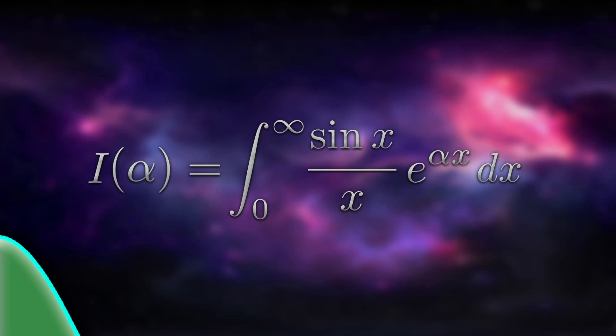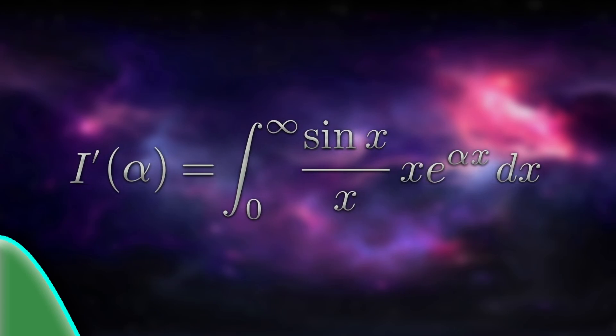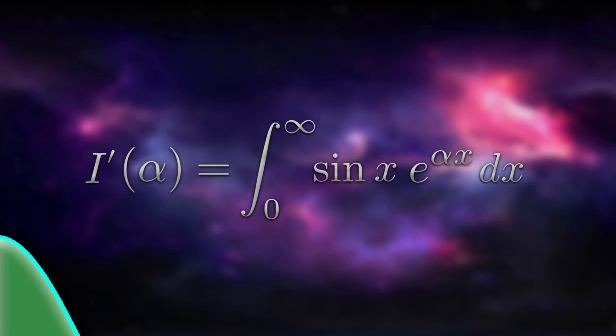We proceed by differentiating with respect to alpha. We're treating x as a constant, so sin x over x is constant and is unaffected. The derivative of e to the alpha x is x e to the alpha x, which is what we have here. The x's cancel, and we get this.